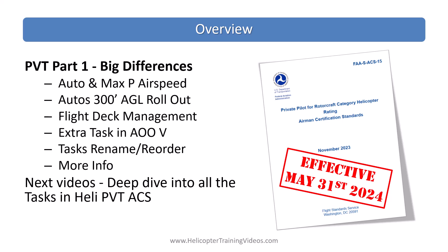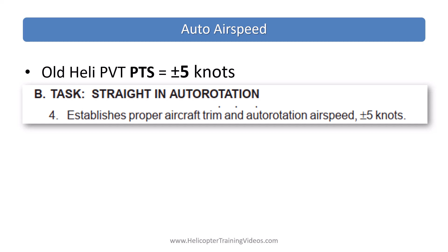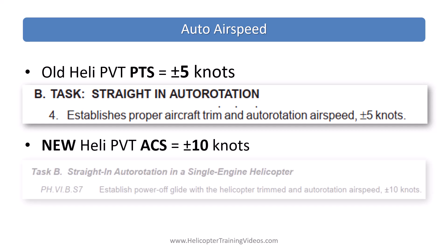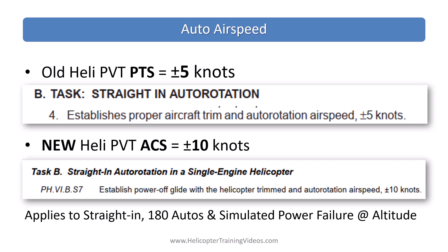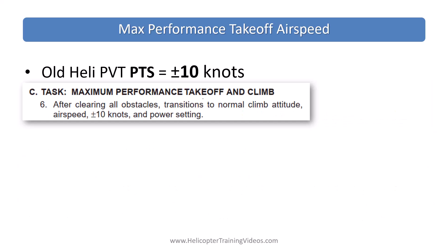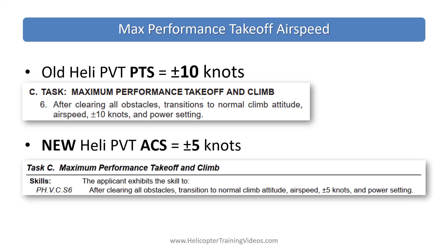The next videos will really dig deep into all of the tasks and the specific elements required for each one. First, auto airspeed: the old PTS had a plus or minus five knots for the auto rotation speed. The new ACS has a plus or minus 10 knots, and that applies to straight-in autos, 180 autos, and simulated power failures at altitude. The max performance takeoff speed used to be plus or minus 10 knots, but under the ACS it's got tighter — it's now plus or minus five knots. That's the speed once you've cleared the obstacle, what we call the normal climb speed, and it has become a little bit tighter.